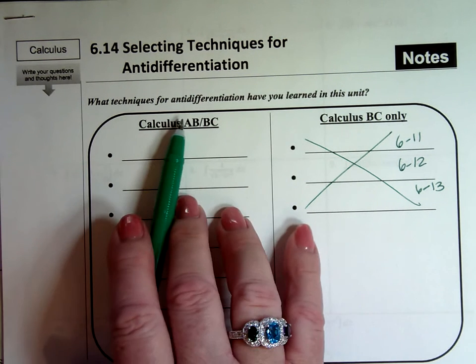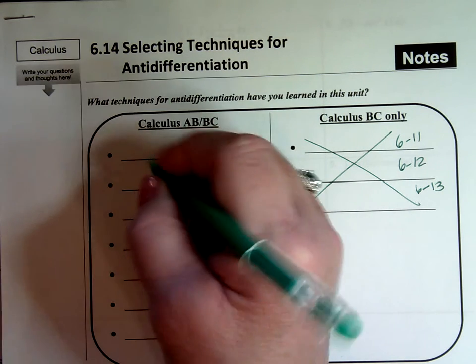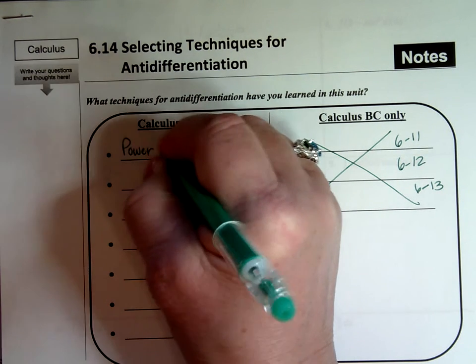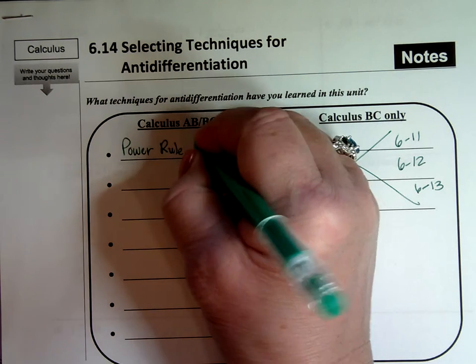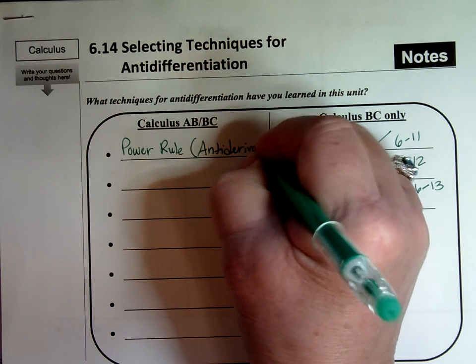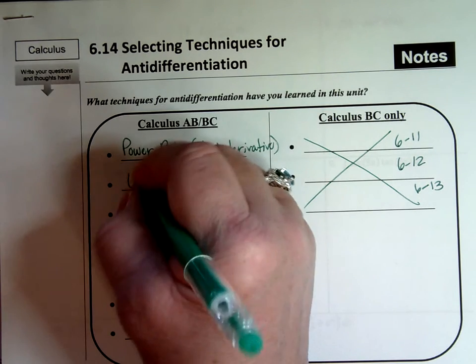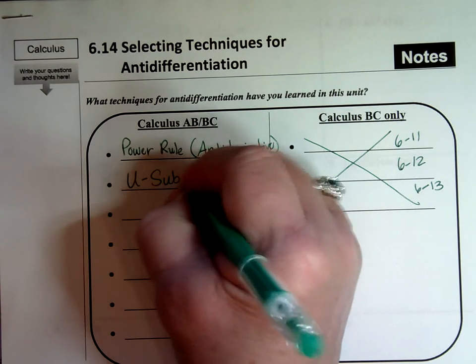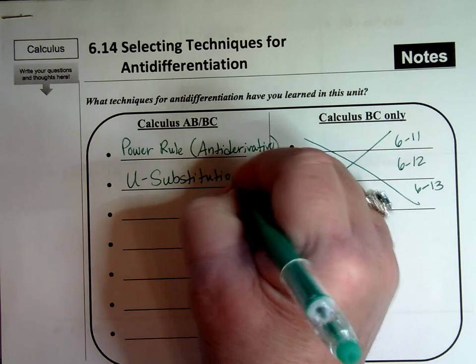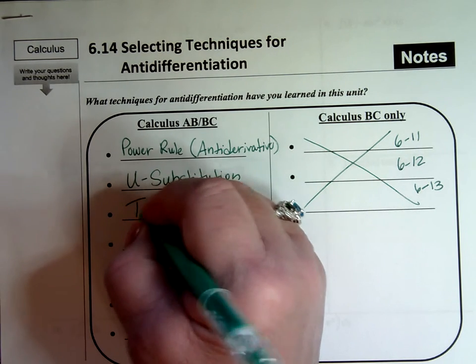So what techniques for anti-differentiation, for integration, have you learned in this unit? We learned a whole bunch of different things. We learned the power rule to find an anti-derivative. We learned u-substitution. That was a hard one. We learned the trig rules, some trigonometry things.